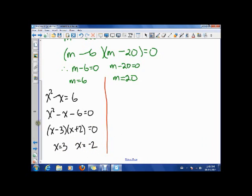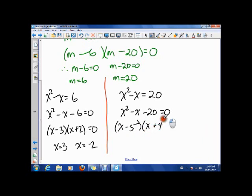Now remember, m was kind of like an intermediate step, so my final answer is x, and I also know that x squared minus x is equal to 20. Well, that means that x squared minus x minus 20 is 0, means that x minus 5 times x plus 4 is 0, well, that means that x is 5, or x is negative 4.